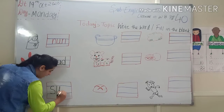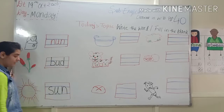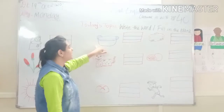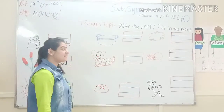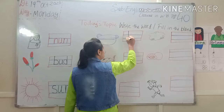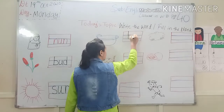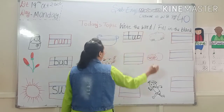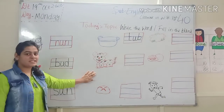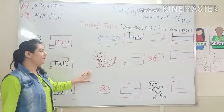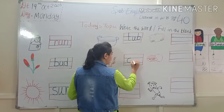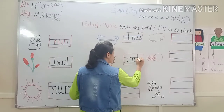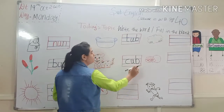S-U-N. Sun. Now look at the picture and tell me what is this. Yes, it's tub. T-U-B. Tub. Now kids, tell me — which picture is this? Yes, it's cub. Kids, write along with me. C-U-B. Cub.